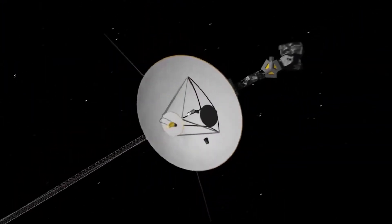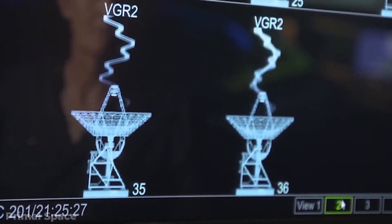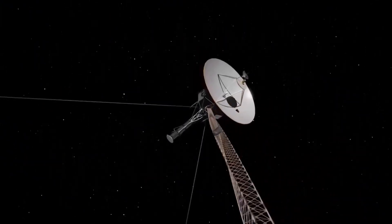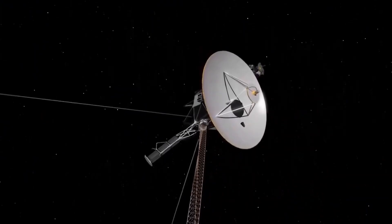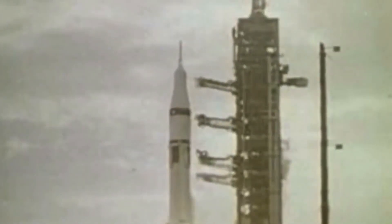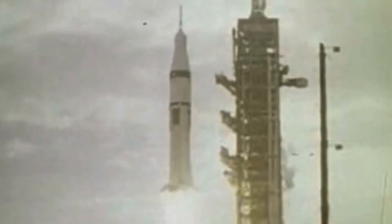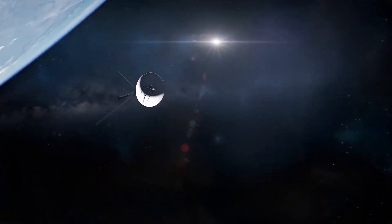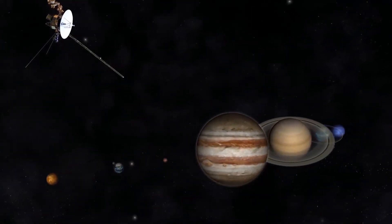Voyager 2 was launched first, on August 20th, 1977. It was followed up on September 5th, 1977, by Voyager 1, which was put on a faster, shorter trajectory straight to Jupiter. Voyager 1's course was optimized for the Titan flyby, and Voyager 2 for the Grand Tour. Both launches took place from Cape Canaveral.